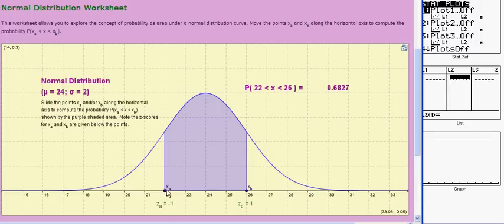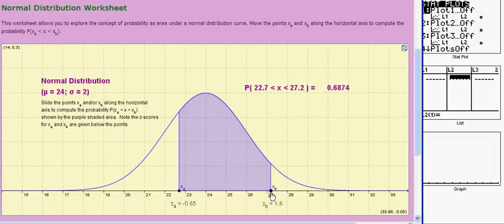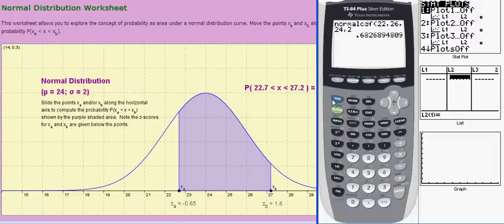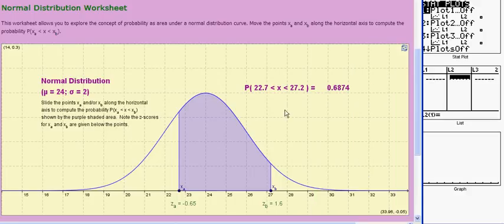Let me just do another quick example to kind of reinforce the idea. So I'm going to put in 22.7 and 27.2 to show you how that works, and you can work along with me as I do this. I'm going to take the normal CDF function, again the lower value first, 22.7 comma the upper value, 27.2, then the mean and standard deviation. And I get about 68.7% roughly, which is in pretty good agreement with the worksheet.